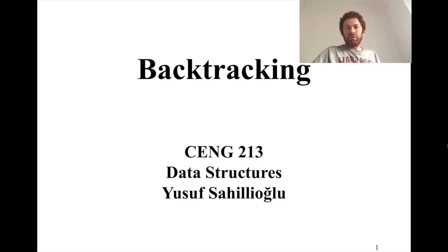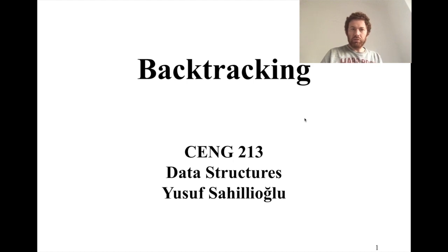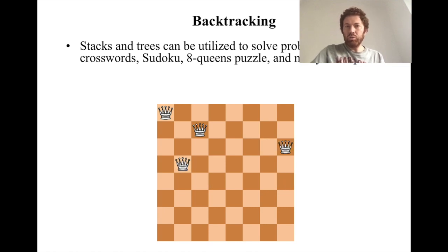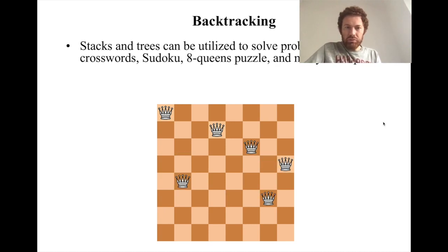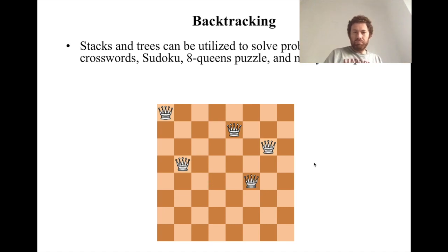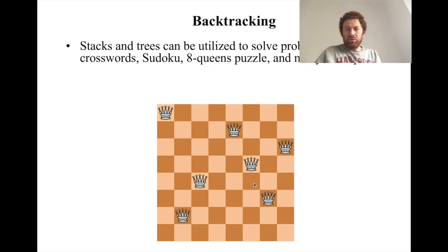We are talking about backtracking, a nice paradigm in algorithms. Here I will mostly focus on the data structure aspect — in particular, we will see stacks in action to solve problems using backtracking, and also concepts from trees. Backtracking is a way to solve problems that need some undoing mechanism. Sudoku is one example; the eight queens puzzle is another. In the eight queens puzzle, the task is to place eight queens on a chessboard such that they don't threaten each other. Along your iterations, you may need to update a queen's location — to undo a decision.